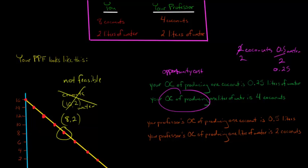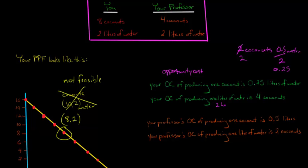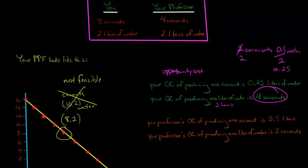Your opportunity cost of producing one liter of water is four coconuts. For you to get one liter of water takes two hours, because you get half a liter per hour. And in two hours you could have collected four coconuts at two per hour. So the time you could have spent collecting one liter of water could have been spent collecting four coconuts. So your opportunity costs are: one coconut costs 0.25 liters of water, and one liter of water costs four coconuts.